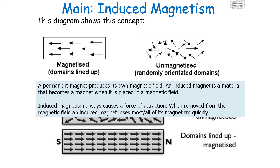It's very important to note that induced magnetism always causes a non-contact force of attraction. When removed from a magnetic field, an induced magnet will lose most or all of its magnetism quickly, because those domains will become randomly orientated instead of all lining up in the same direction.